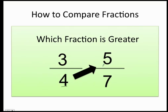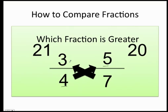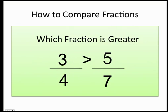For example, four times five equals twenty. Then do the same for the other one: seven times three equals twenty-one. Now that you have this, you ask yourself which one is greater, twenty-one or twenty? Since twenty-one that belongs to this side is greater, that means that three-fourths is greater than five over seven.